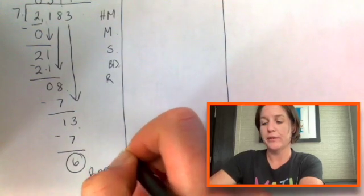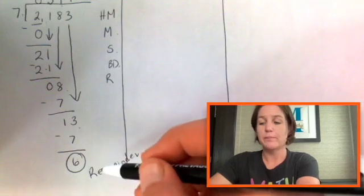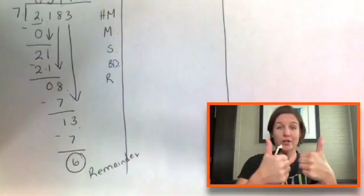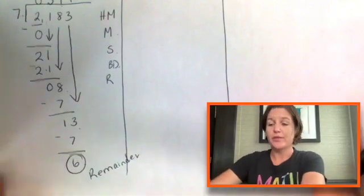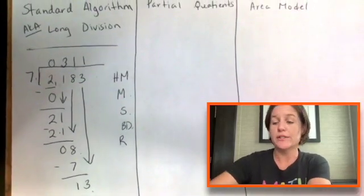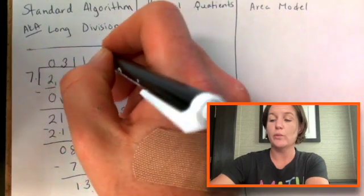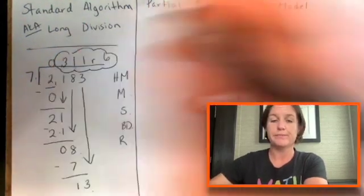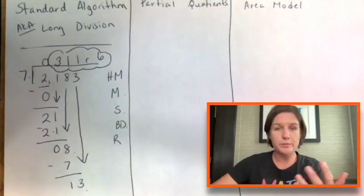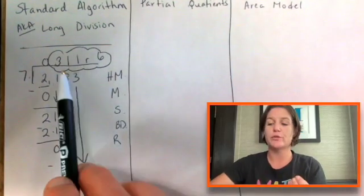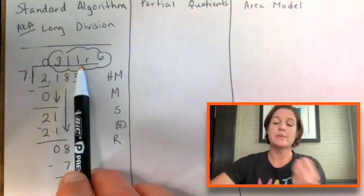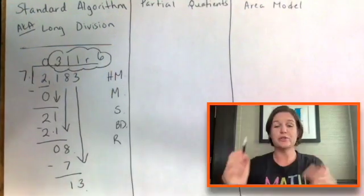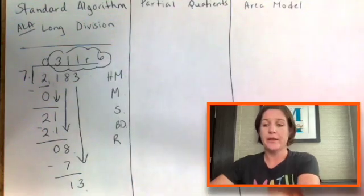this is going to be called the remainder. And since our remainder six is less than our divisor, we're in good shape. So the answer, the quotient, would be 311 with a remainder of six. Cool. And of course you could multiply that to see if it makes sense. You could do 311 times seven and then add, remember to add your remainder of six right there.